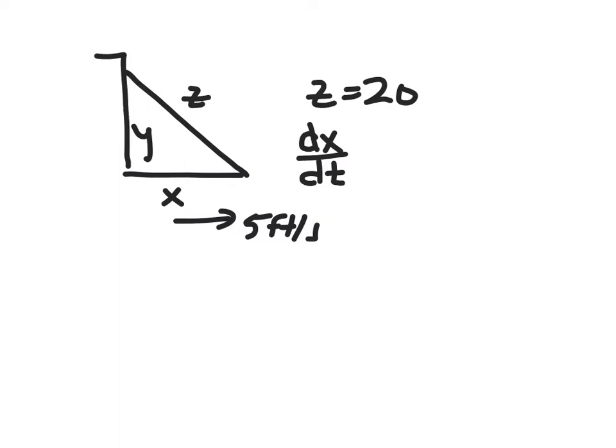And in this case, since it's going away from the wall, this distance is increasing, so it's positive 5. If it was moving closer to the wall, it would be negative 5 there.